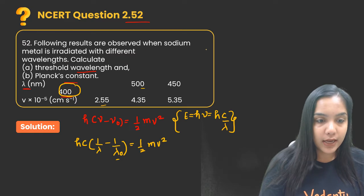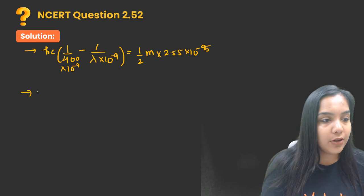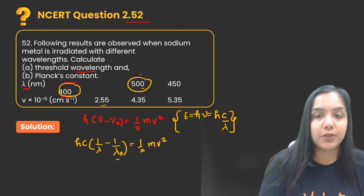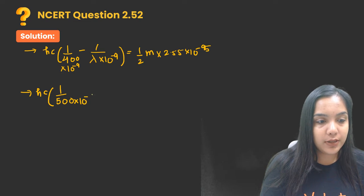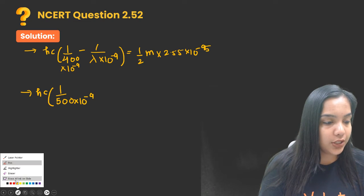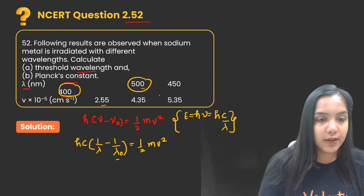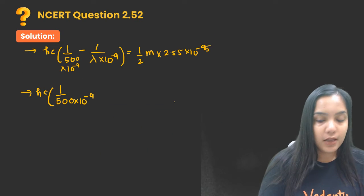Where it has been provided 500, okay, 500 into 10 raised to power minus 9. So here is the change, this is for 500 and this value. 400 is for this one.